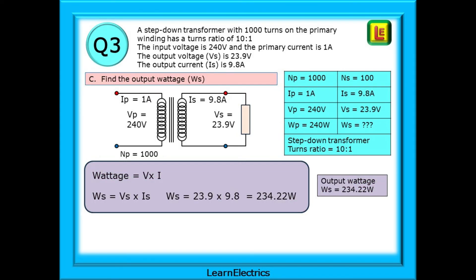Now for part C. Find the output wattage or WS. This is just the same calculation as before. We know VS and we know IS. Just multiply the two together to arrive at the watts. 23.9 volts multiplied by 9.8 amps is 234.22 watts. WS is 234.22 watts.